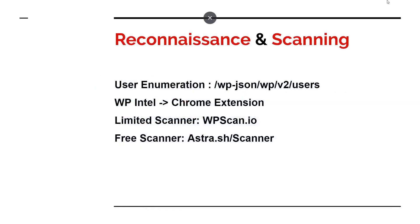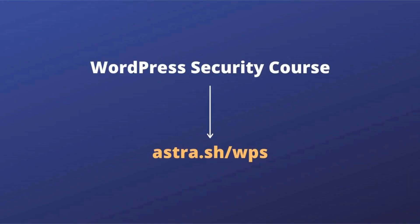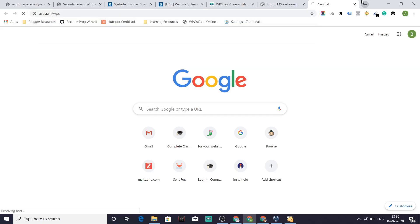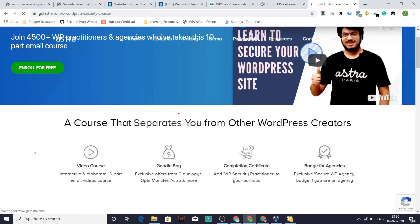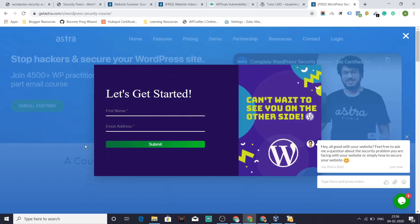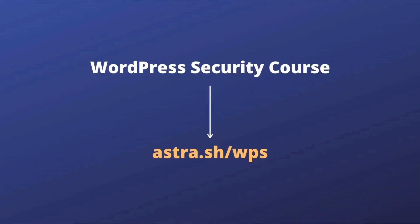So this is all in the phase of reconnaissance and scanning where the hacker tries to identify all the information they can potentially gather. We have a complete free WordPress security course for you at astra.ss/wps. It's an email course — you receive emails daily for 10 days, that's 10 lessons in total, and you'll be able to secure your site. Subscribe and write in the comments what you want to hear next. Bye bye!